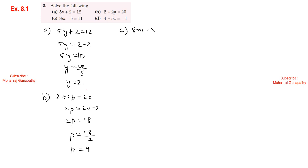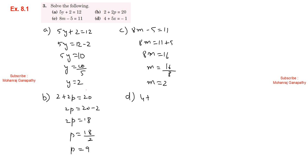Part c: 8m minus 5 equals 11. So 8m equals 11 plus 5, giving 8m equals 16. Then m equals 16 divided by 8, therefore m equals 2. Part d: 4 plus 5x equals minus 1. So 5x equals minus 1 minus 4, giving 5x equals minus 5. Then x equals minus 5 divided by 5, therefore x equals minus 1.